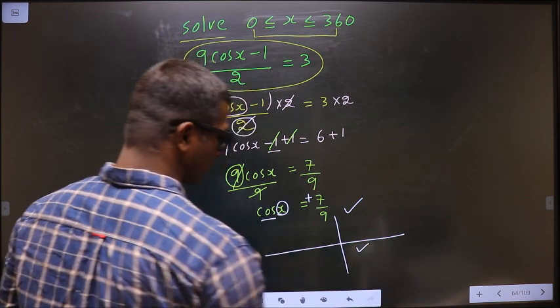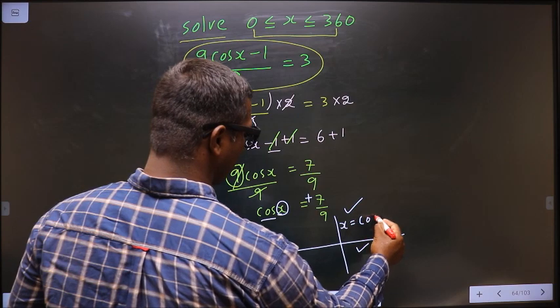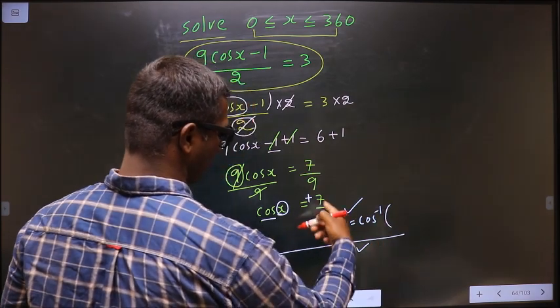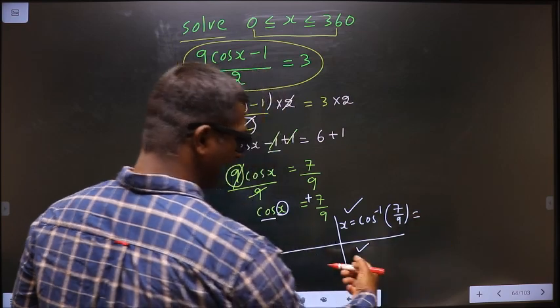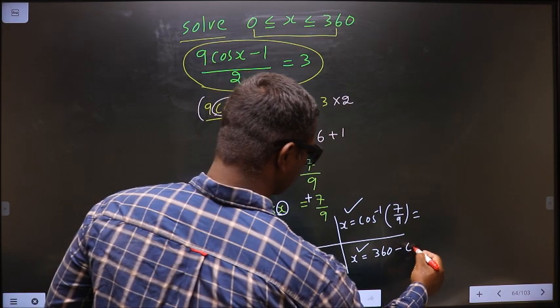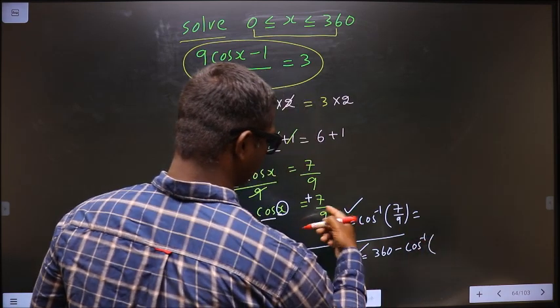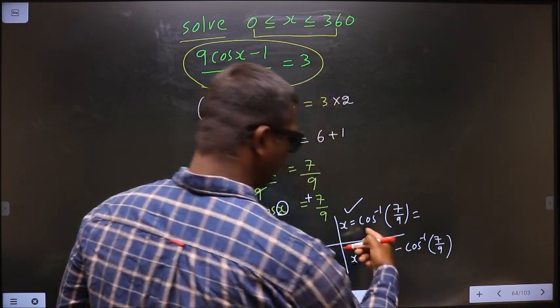To get an angle in the first, we do directly cos⁻¹(7/9). To get an angle in the fourth, we should do 360° - cos⁻¹(7/9). Now put this in the calculator.